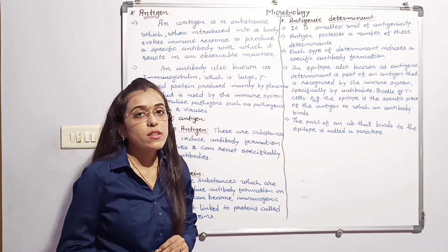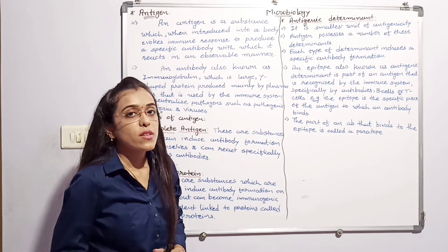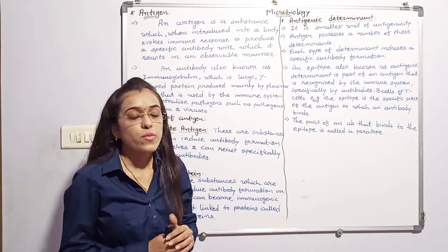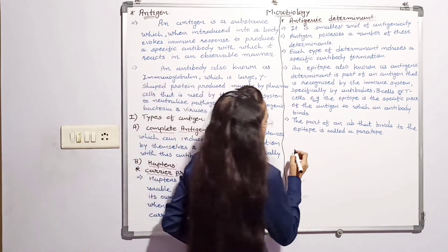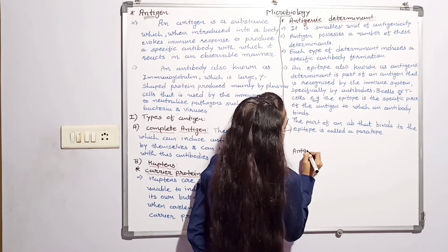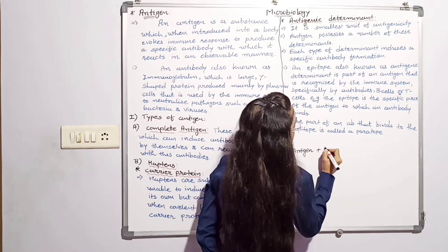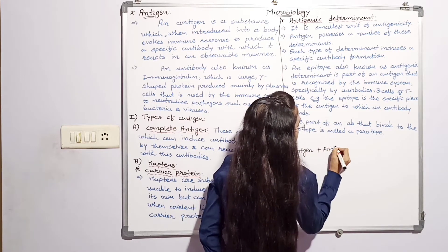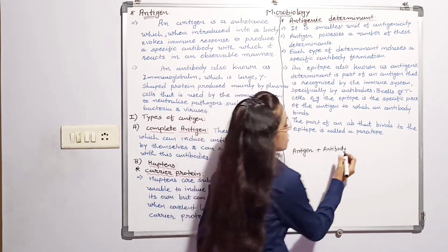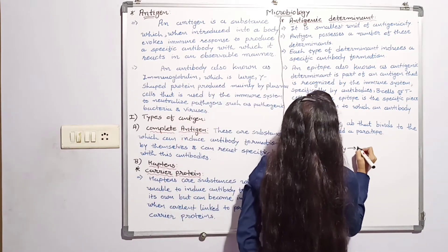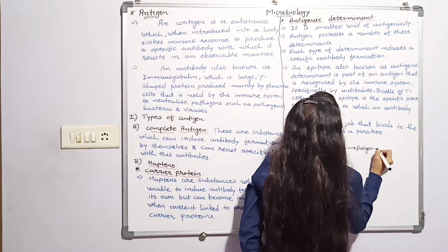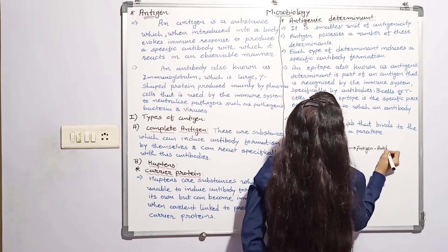Antigen is a substance which causes the immune response. Here antigen plus antibody, then what happens? Make a complex. Antigen-antibody complex.